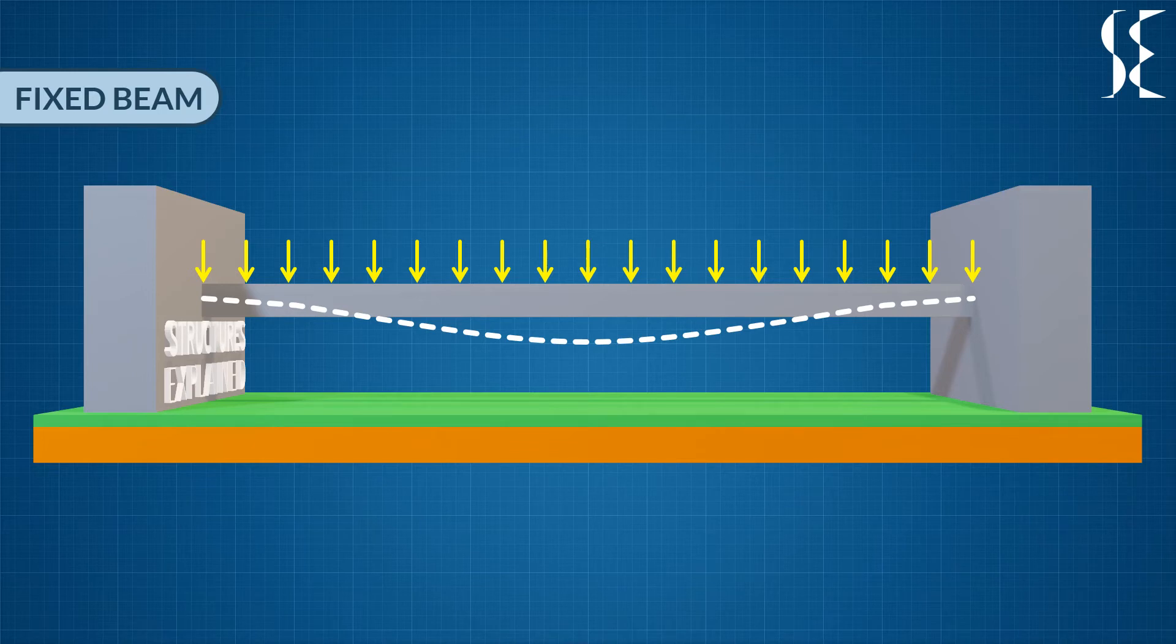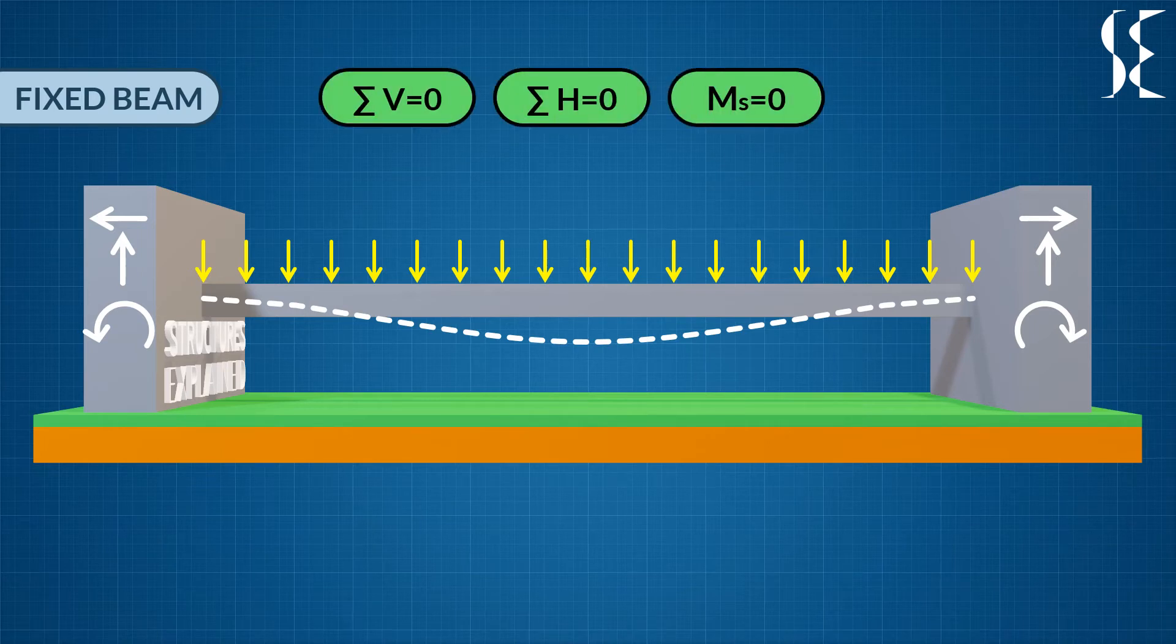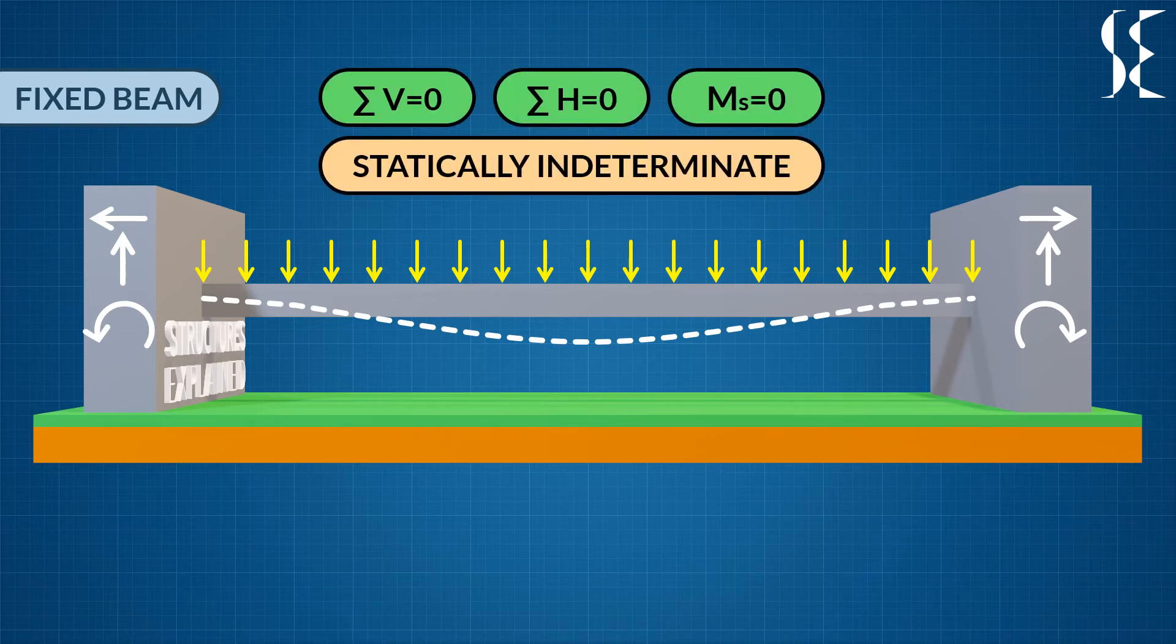Fixed support gives all 3 reactions which are horizontal, vertical and moment at both supports, hence a total of 6 unknowns. These unknowns cannot be found by 3 equilibrium equations. Hence, the arrangement is called statically indeterminate.